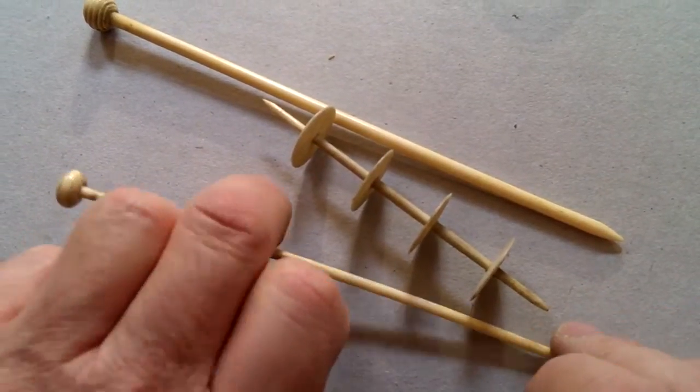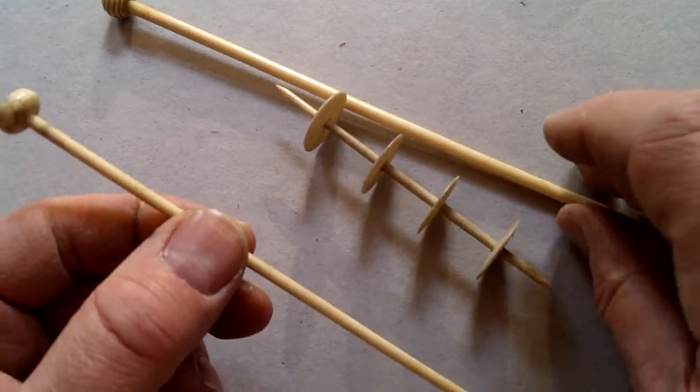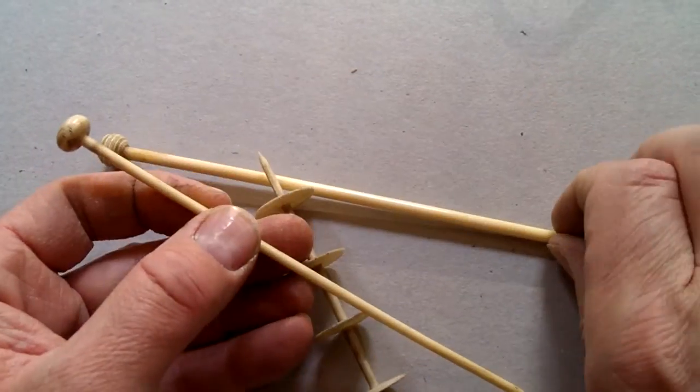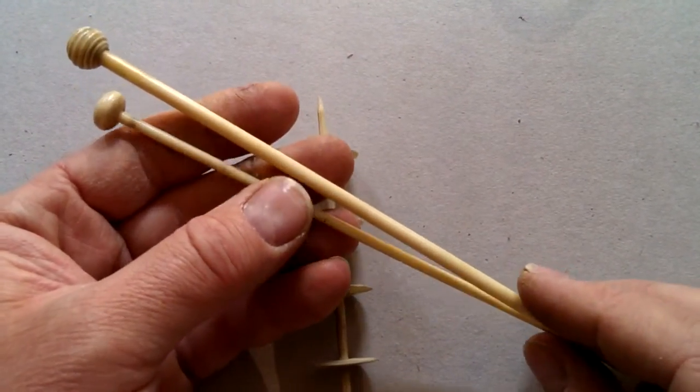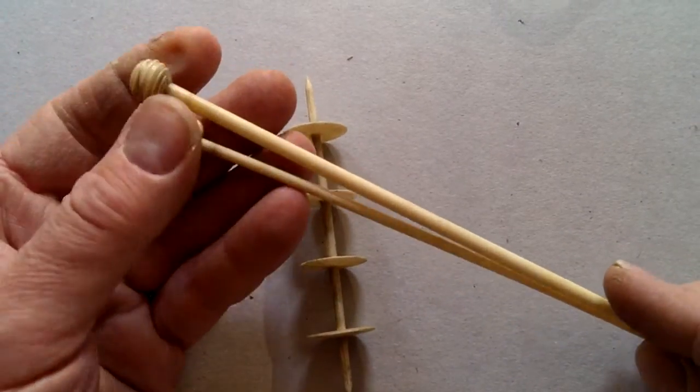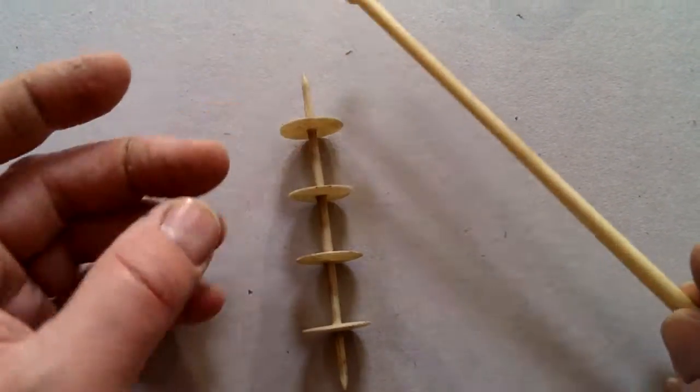Ladies and gentlemen, these are obviously 19th century, possibly early 19th century Georgian era. There are two knitting or crochet needles of some type, cow bone, hand turned ends, lovely little spherical ends, an oval end there.